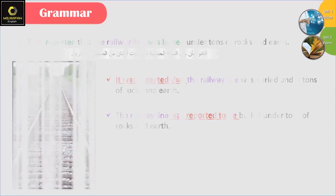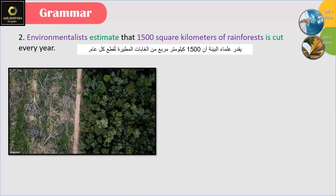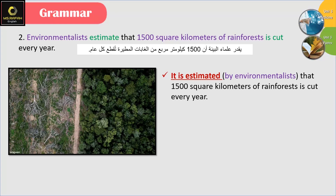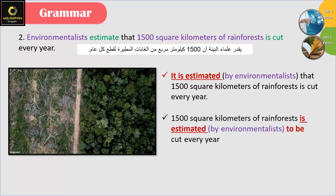Number 2: 'Environmentalists estimate that 1,500 square kilometers of rainforests is cut every year.' We can say either: 'It is estimated by environmentalists that 1,500 square kilometers of rainforests is cut every year,' or '1,500 square kilometers of rainforests is estimated by environmentalists to be cut every year.'